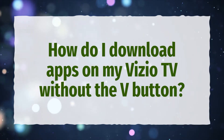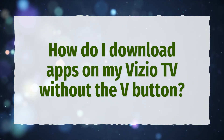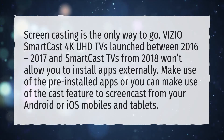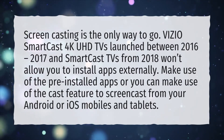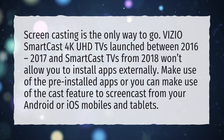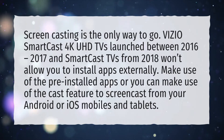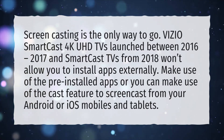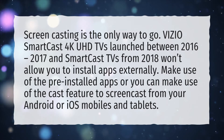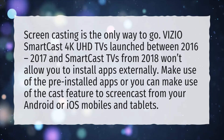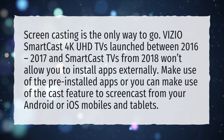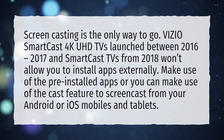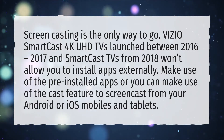How do I download apps on my Vizio TV without the V button? Screencasting is the only way to go. Vizio SmartCast 4K UHD TVs launched between 2016-2017 and SmartCast TVs from 2018 won't allow you to install apps externally. Make use of the pre-installed apps, or you can use the Cast feature to screencast from your Android or iOS mobiles and tablets.